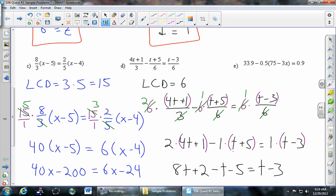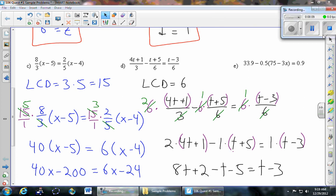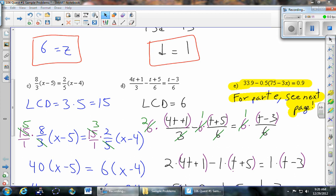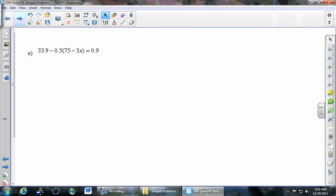Okay, finally part E. So we've run out of room here, so I've just put a little note. We're going to go to the next page for part E. 33.9 minus 0.5 times 75 minus 3x equals 0.9. So first thing we'll do is distribute to get rid of those parentheses.